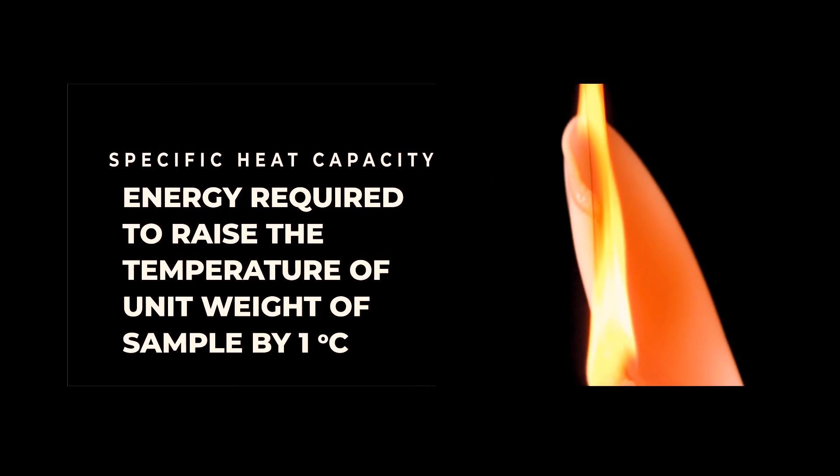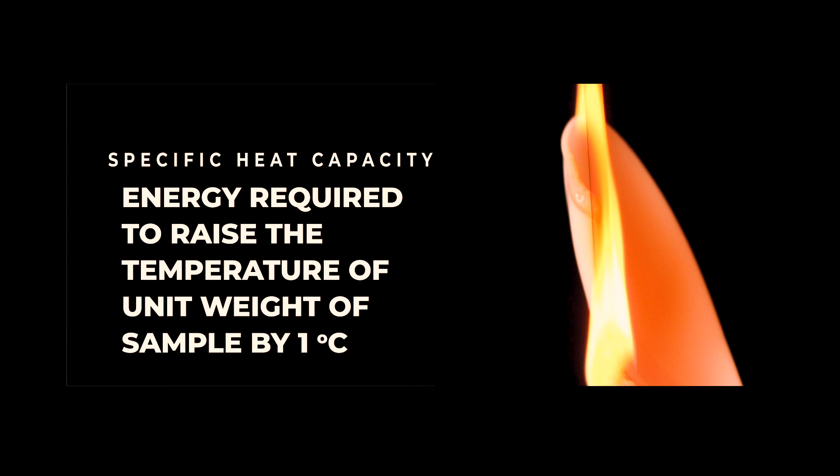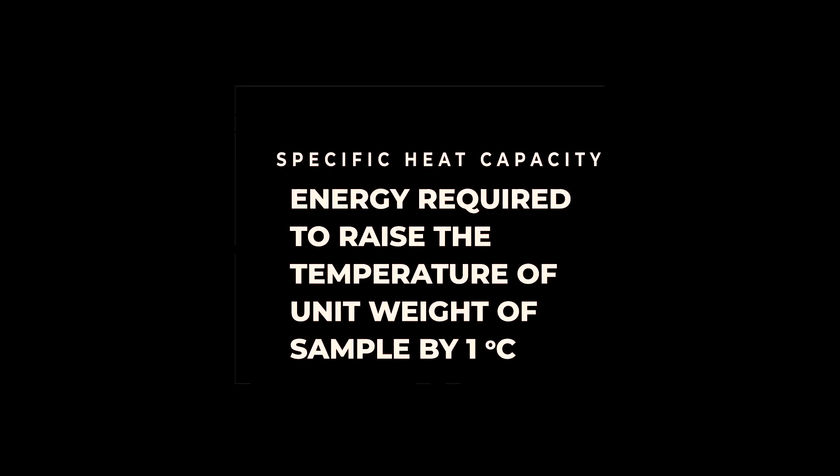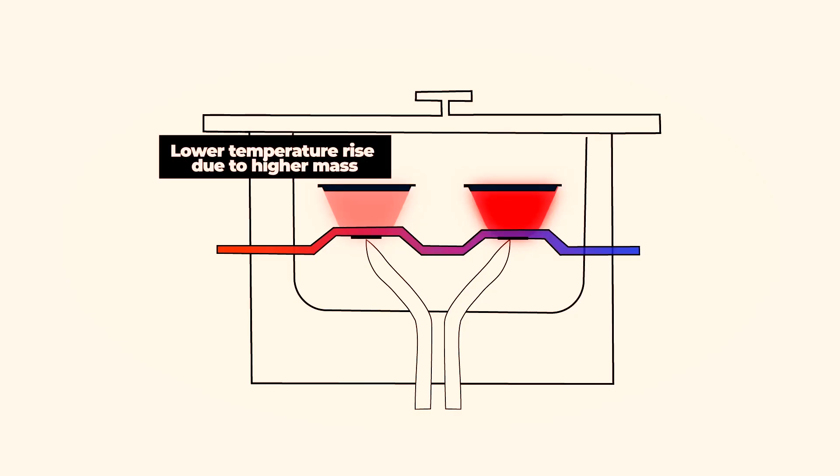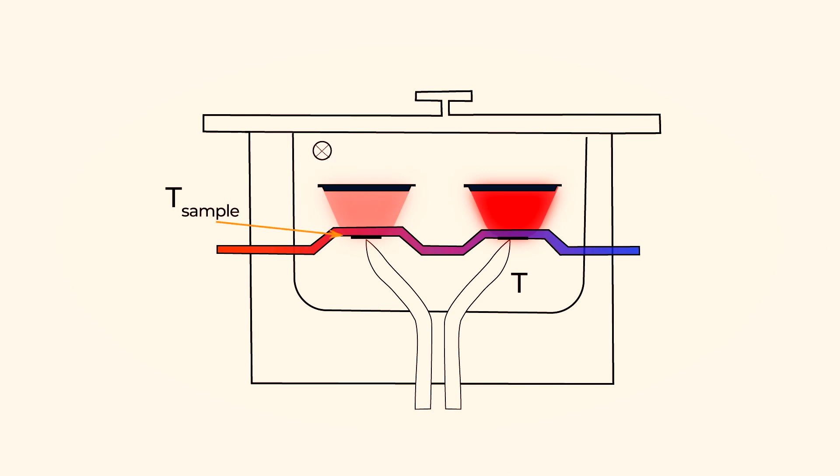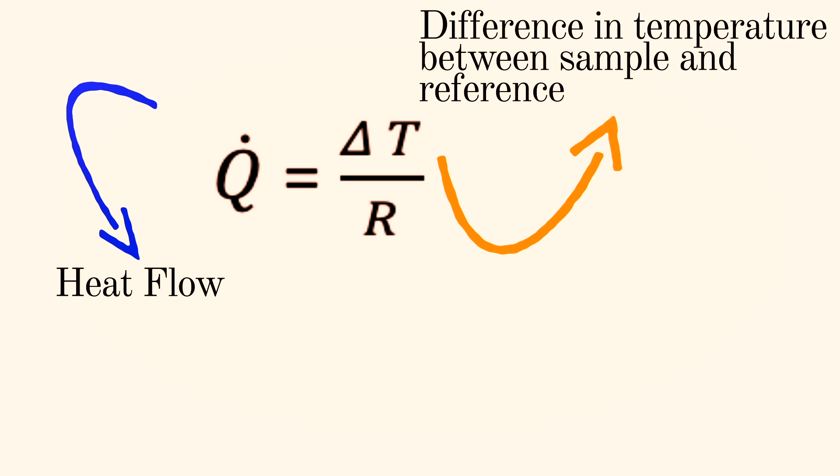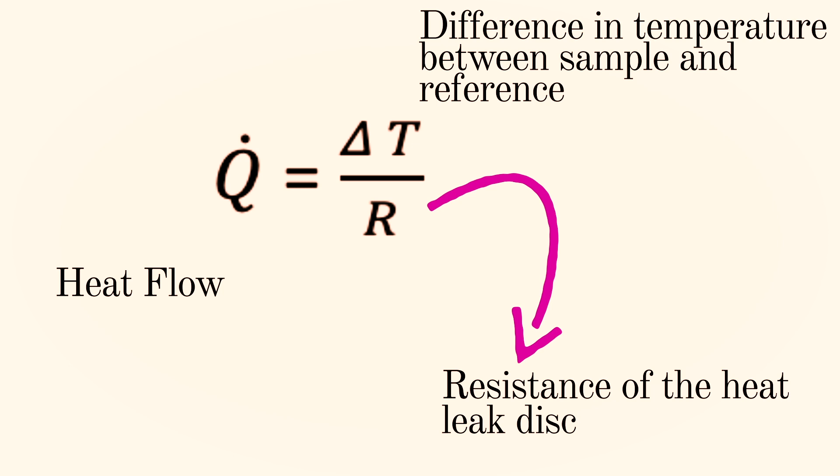Specific heat capacity is the heat absorbed by a unit weight of the sample as it moves through 1 degree C increase in temperature, which is why more heat is required to raise the temperature of a heavier sample. The temperature of the sample block and the reference are measured by the thermocouples. Heat flow is calculated based on the thermal equivalent of Ohm's law as shown in this equation. Where q dot is the heat flow, delta T is the difference in temperature between the sample and the reference, and R is the thermal resistance of the heat leak disk.